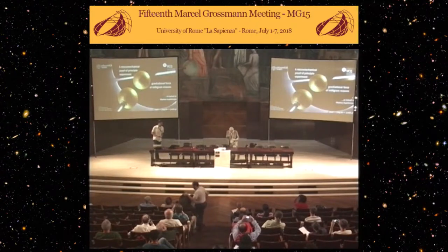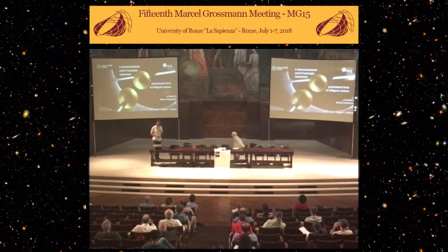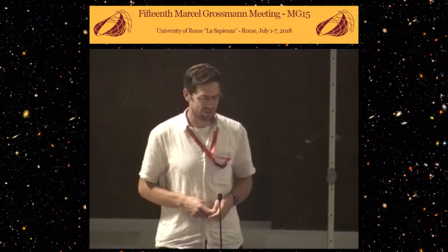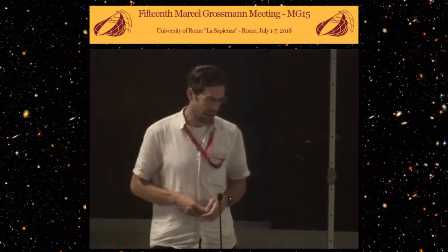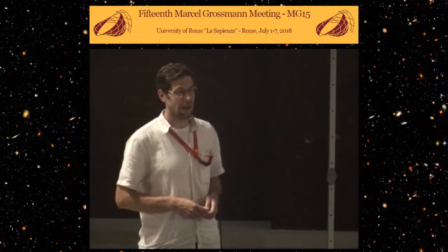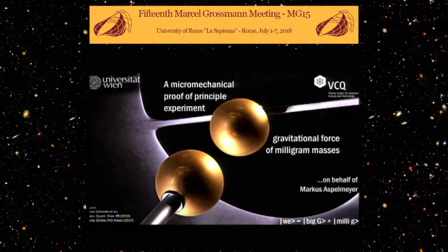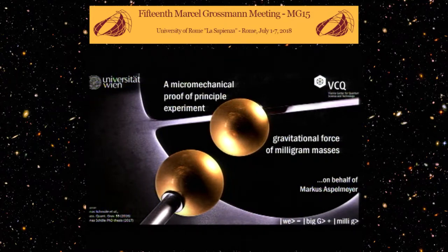Thanks for the invitation. I'm presenting on behalf of Marcus Aspenmeyer, who is sorry he cannot be here — he is very tied up with other tasks at home, so he asked me to come and present our progress on one particular type of experiment at the University of Vienna. We are trying to measure the gravitational interaction of very small masses. This is based on a PhD thesis that came out last year where Jonas designed the whole experiment, and hopefully it will become obvious why we are somehow in a superposition between a big G and a midi G experiment.